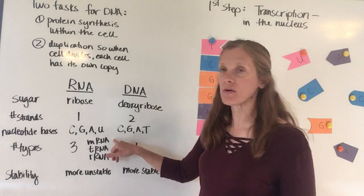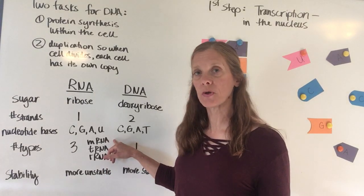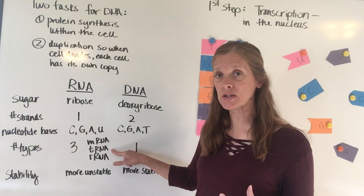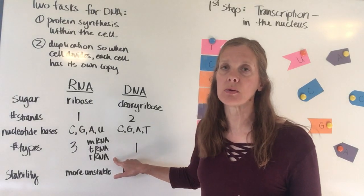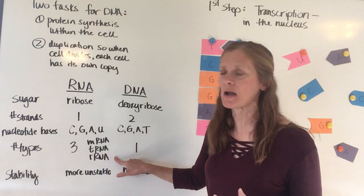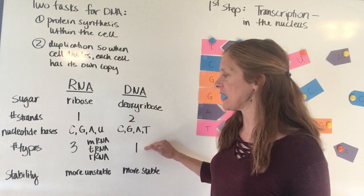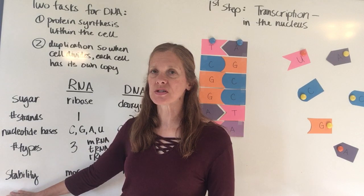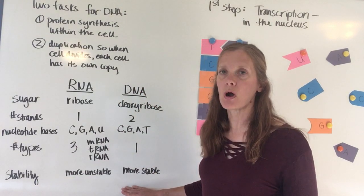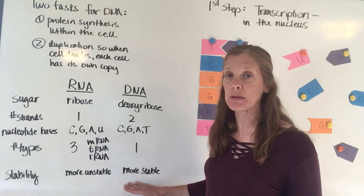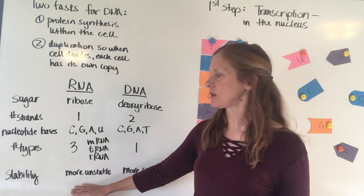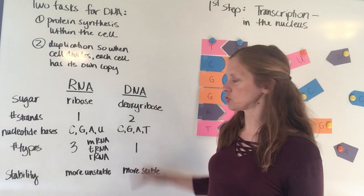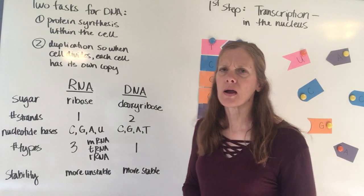There are three different types of RNA: mRNA, which stands for messenger RNA; tRNA, which is transfer RNA; and rRNA, which is ribosomal RNA. We'll focus mostly on mRNA and tRNA. DNA, by contrast, has just one kind. DNA is also very stable, which is why it can code for all proteins in a cell, whereas RNA is a slightly more unstable molecule.